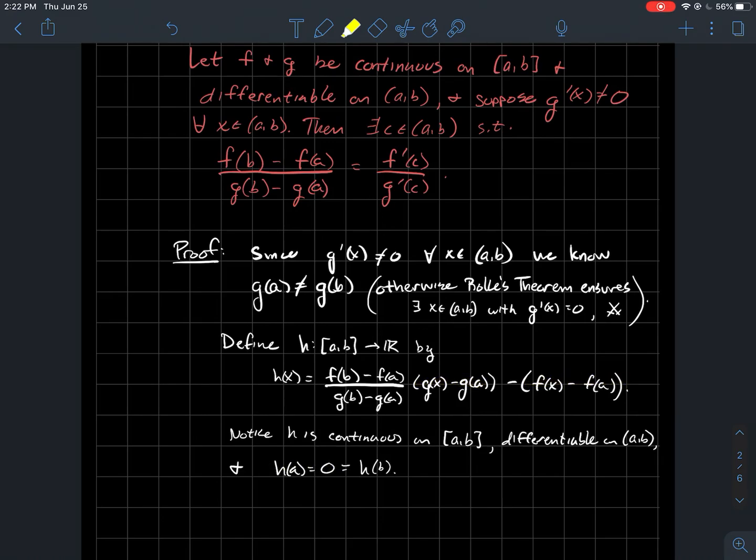when you plug in b, this would be what? g of b minus g of a, which would cancel with this denominator. And here you get minus f of b minus f of a. Well, if there's no denominator there on the left, I hope you see that the terms with the f's are going to cancel.